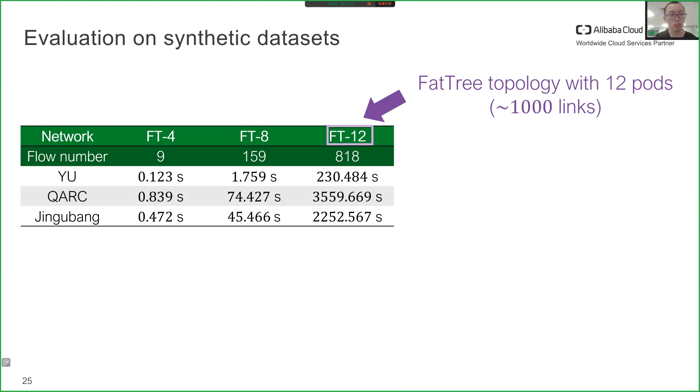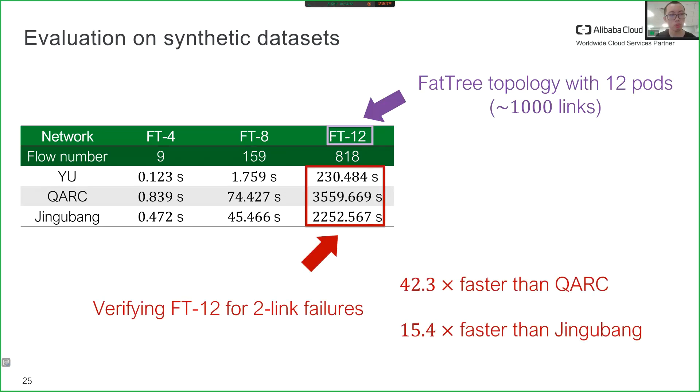We also evaluated Yu on synthetic datasets. FT-12 is a network of FatTree topology with 12 pods containing about 1,000 links. The verification time of Yu for two link failures on FT-12 was 42.3 times faster than QARC, and 15.4 times faster than Jingubang.